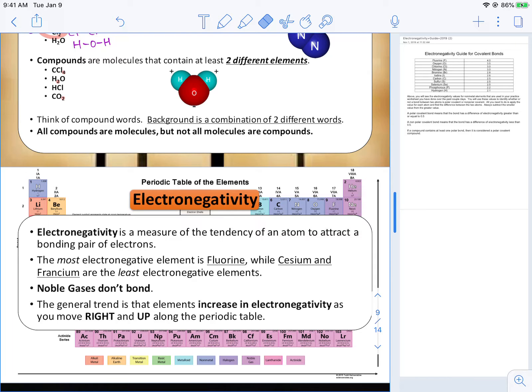Yesterday we classified our compounds as whether or not they are just molecules or are they both molecules and compounds. But today we're going to go a little bit further and classify whether or not there's something called polar or non-polar. And all those words mean is whether or not they have kind of a tug-of-war going on or not.